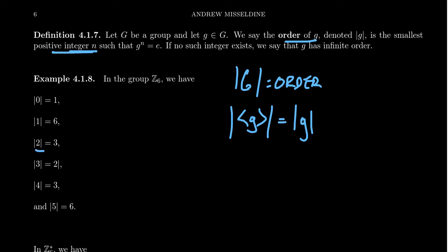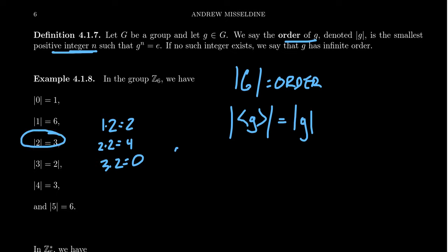The order of 2 mod 6 is going to be 3. Notice that 1 times 2 gives 2, 2 times 2 gives 4, and 3 times 2 gives 6 which is 0 — so the smallest multiple of 2 that gives back the identity is 3. Those are the elements of the subgroup: 0, 2, and 4, which is the subgroup generated by 2.